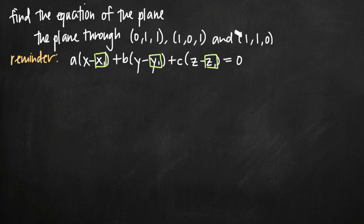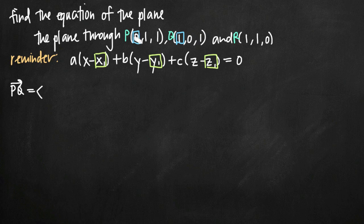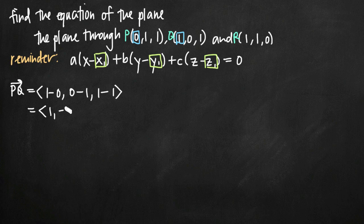Let's label these three coordinate points P, Q, and R — it's arbitrary which letters we use. If we find the vector PQ and the vector PR, that gives us two vectors which define the plane. For vector PQ, we take the components from Q and subtract the components from P. So: x-component is 1 minus 0, y-component is 0 minus 1, z-component is 1 minus 1. Simplifying, vector PQ equals (1, -1, 0).